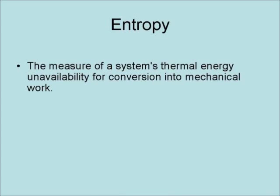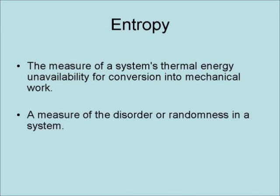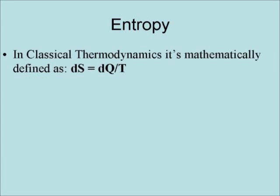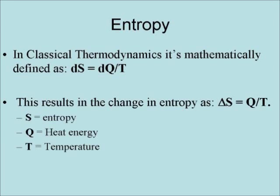Entropy is the measure of a system's thermal energy unavailable for conversion into mechanical work. It is a measure of the disorder or randomness in a system. It is a measure of the equivalent states or multiplicity of a system. In classical thermodynamics, it is mathematically defined as dS equals dQ over T. This results in the change in entropy as ΔS equals Q over T, where S equals entropy, Q equals heat energy, and T equals temperature.